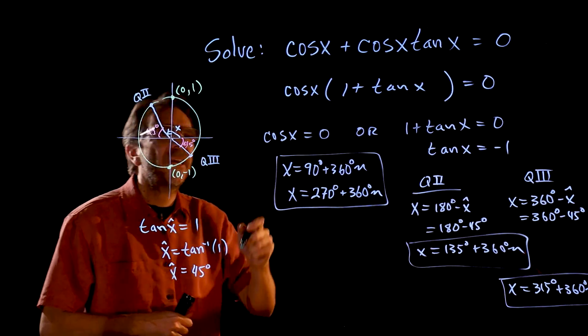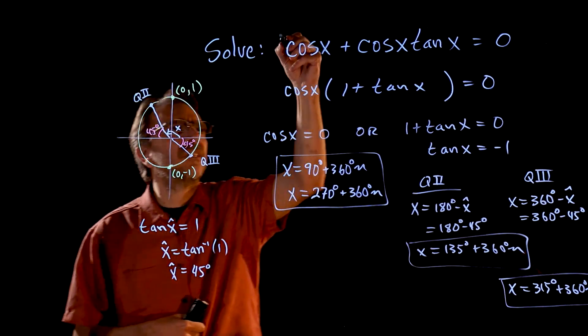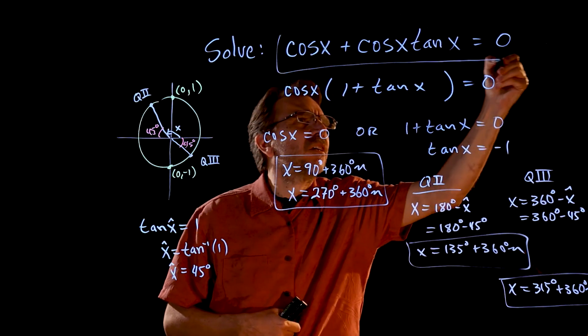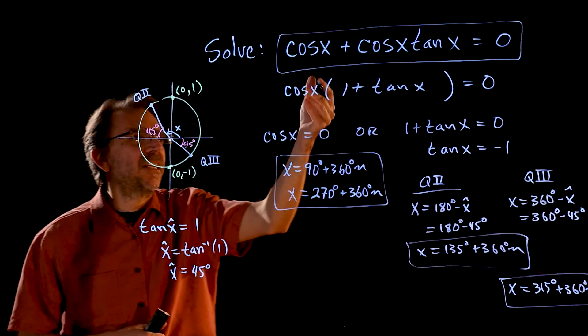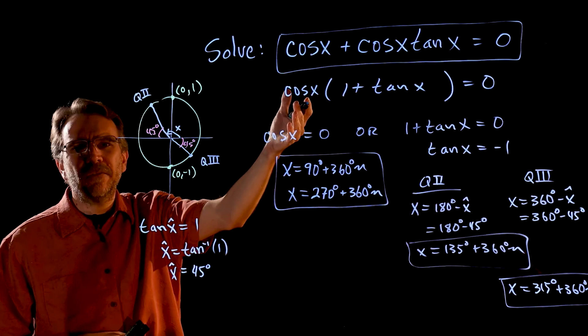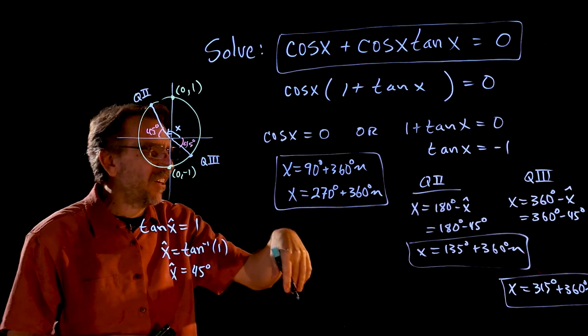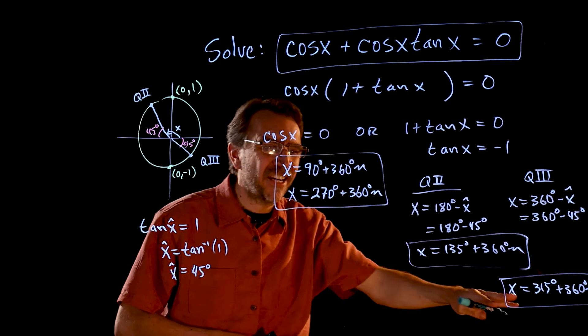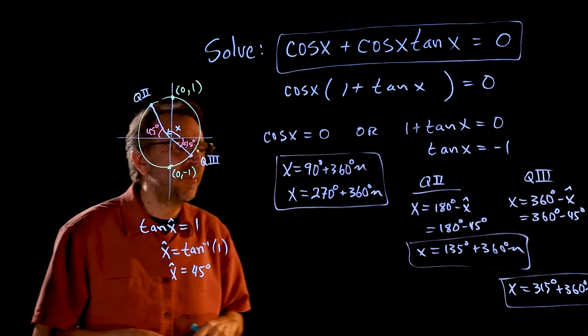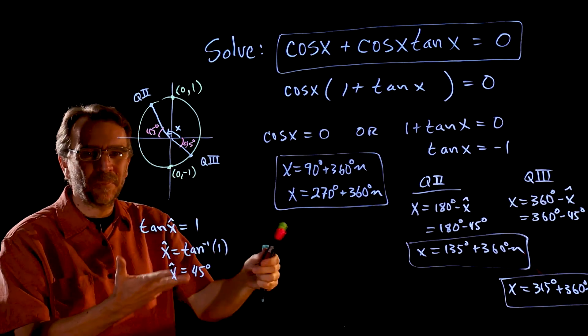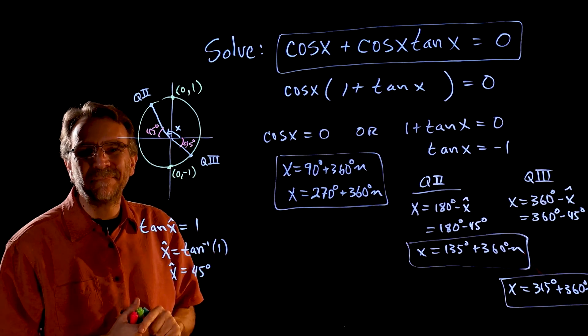So here we have it — the original trigonometric equation had a GCF, we set each factor equal to zero, and we got infinitely many answers. There you have it.